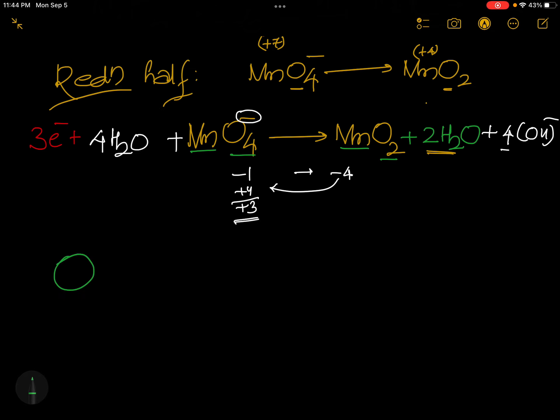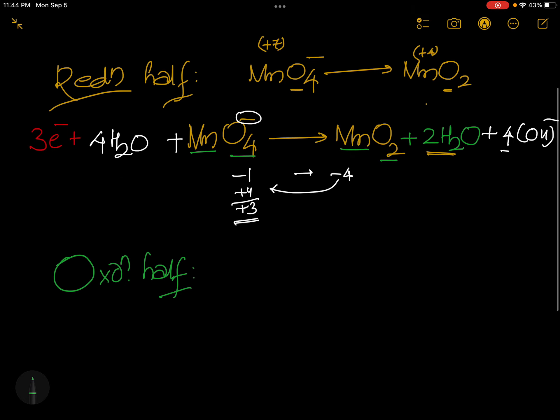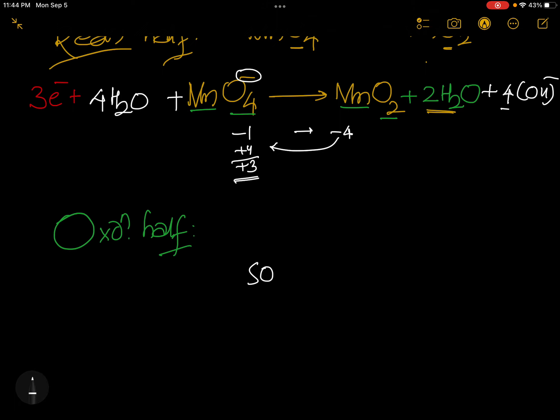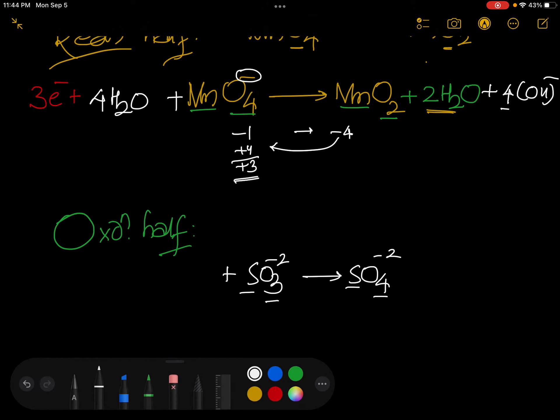Next oxidation half you see. Oxidation half is SO3 minus 2 to SO4 minus 2. See, SO3 minus 2 gives rise to SO4 minus 2. One sulfur. Three oxygens, four oxygens. So you are adding here one water molecule.